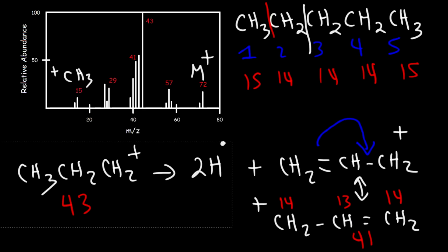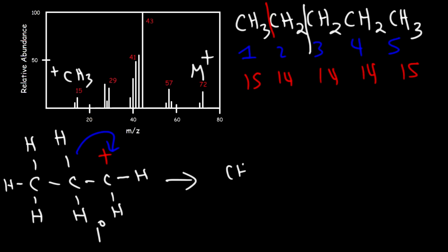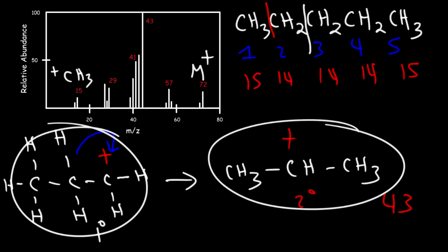It's also important to understand how the primary carbocation could rearrange into a secondary one. Starting with the propyl cation, a hydride shift can occur, converting the primary carbocation into a secondary one. So this is going to be CH and then CH3 with the plus charge on the secondary carbon. The m/z ratio for this as well will be 43, so this carbocation can easily be rearranged into this one as well.